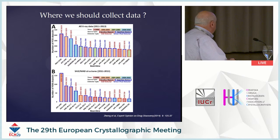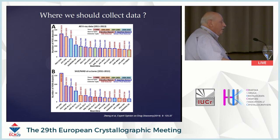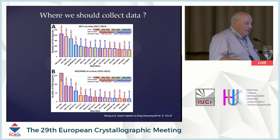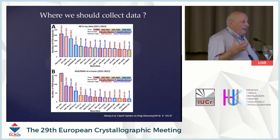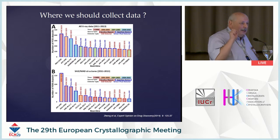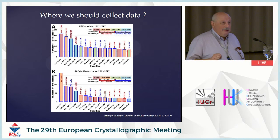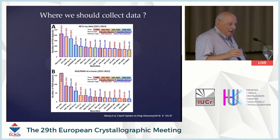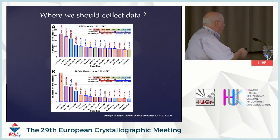We are talking about synchrotrons. The question is: where should we collect data? I am collecting data on beamlines on which I am most successful. Some beamlines I tried once and never came back. Some I tried three times and decided not to go back. It's a very interesting plot — most of the plots are published.